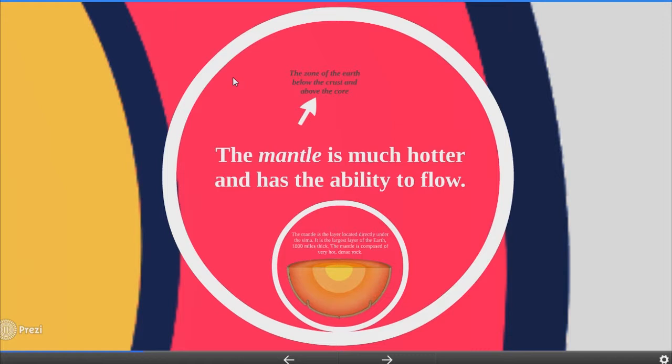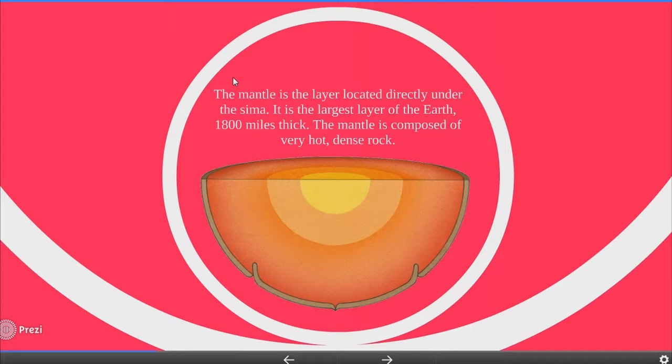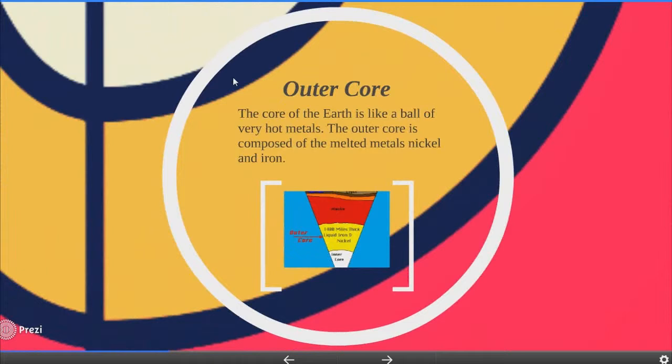The mantle is the zone of the earth below the crust and above the core. It is much hotter and has the ability to flow. The mantle is the layer located directly under the crust. It is the largest layer of the earth, 1800 miles thick, and is composed of very hot dense rock.